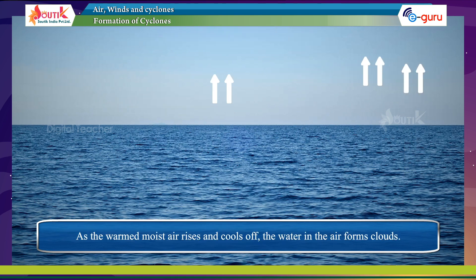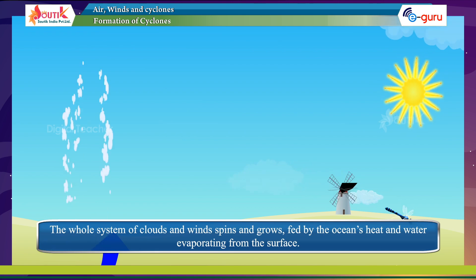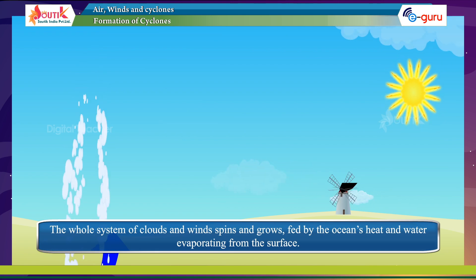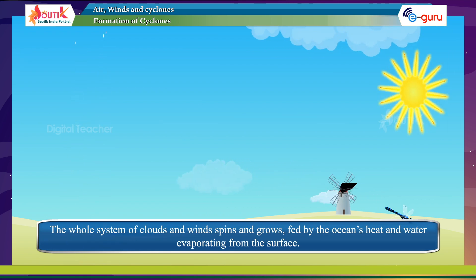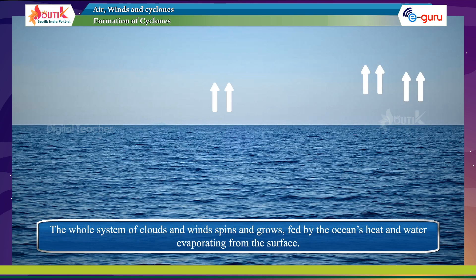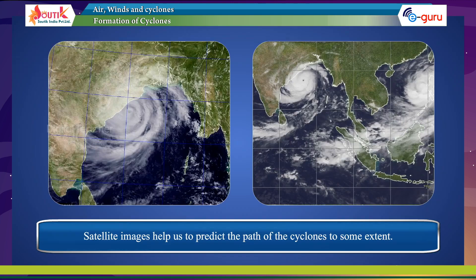As the warm moist air rises and cools off, the water in the air forms clouds. The whole system of clouds and winds spins and grows, fed by the ocean's heat and water evaporating from the surface. Satellite images help us to predict the path of cyclones to some extent.